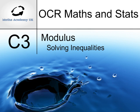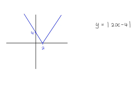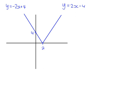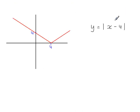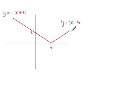The modulus function: solving inequalities. This is the graph of y equals the modulus of 2x minus 4. We can write down the equation of each line separately. This is a different modulus function, y equals the modulus of x minus 4. As before, we can write down the equations of each of these two lines separately: y equals x minus 4, and y equals minus x plus 4.